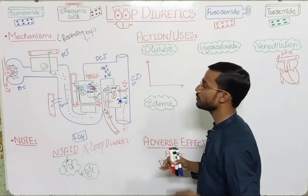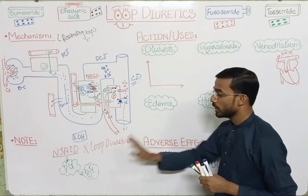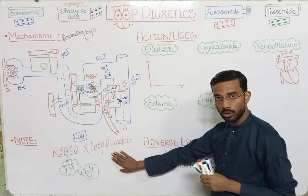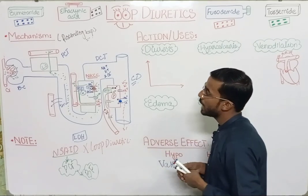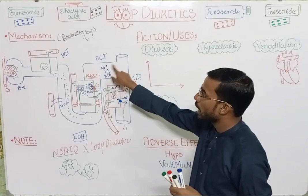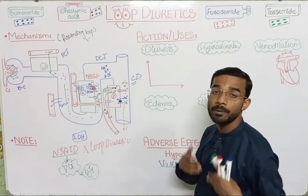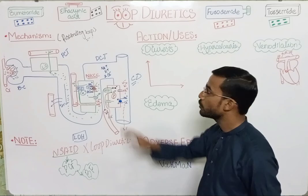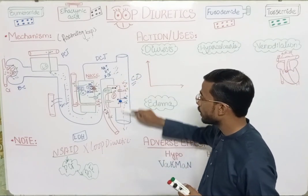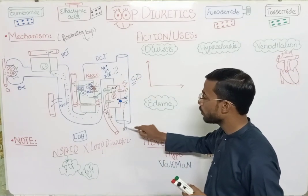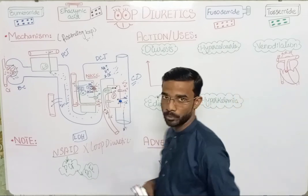Loop diuretics reach the tubule through two ways: through the secretory system and through the filtrate. If there is low filtrate due to reduced glomerular blood flow, then there will be a low amount of loop diuretic reaching the tubule. When ions increase in the tubule, water prefers to stay with them, increasing the overall volume of urine.